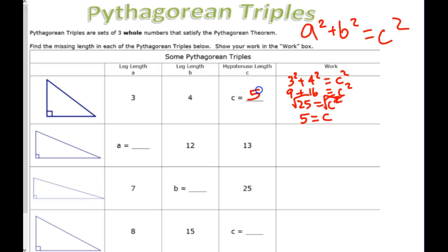3, 4, 5, make a right triangle. Okay? Now, it's not always going to be that way.